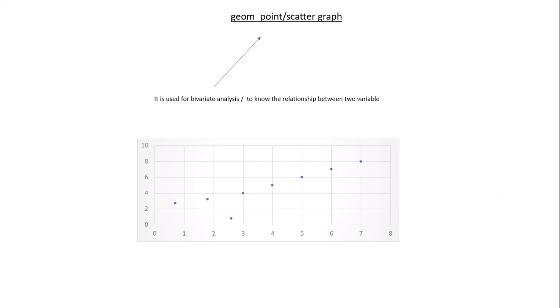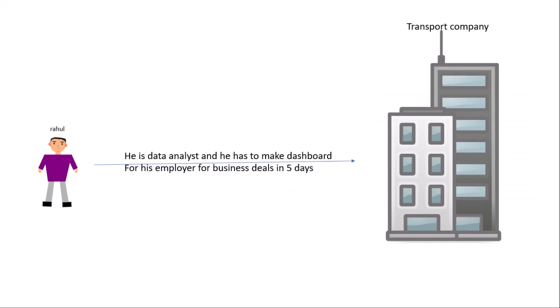First, let's see what a scatter graph is. A scatter graph looks like a collection of points and it is used for bivariate analysis. Bivariate analysis means understanding the relationship between two variables.